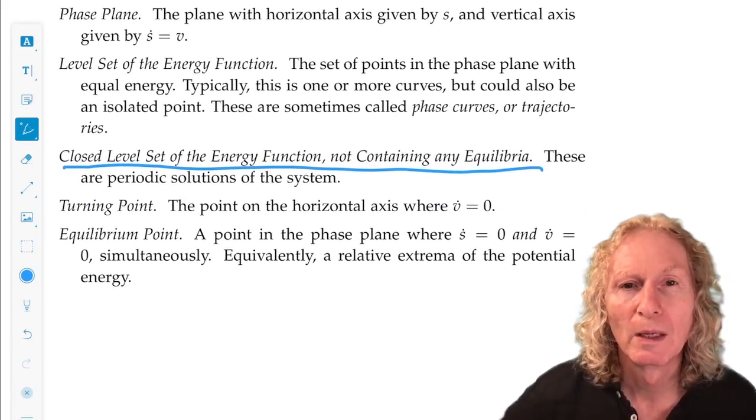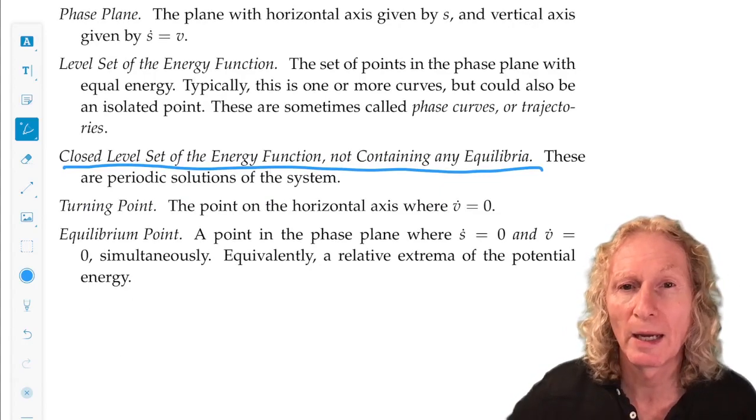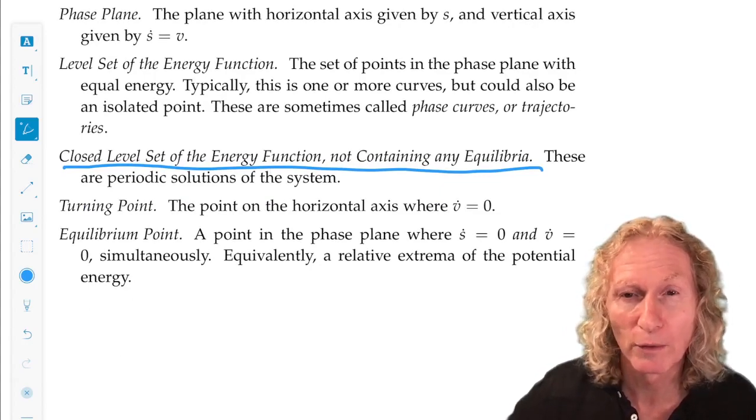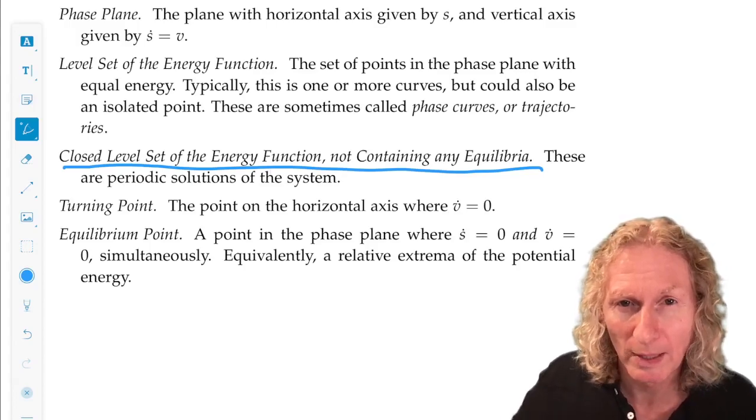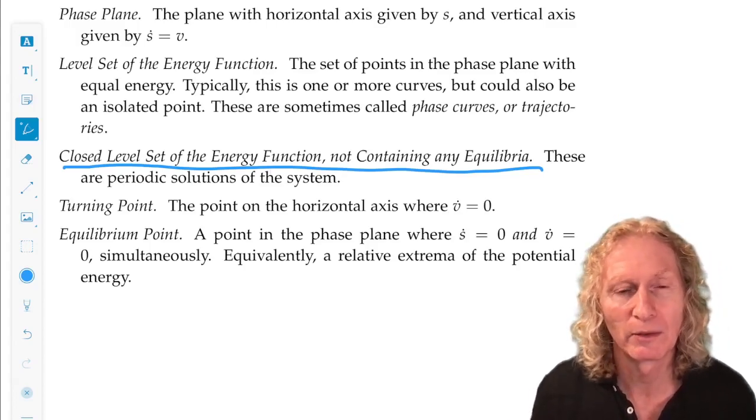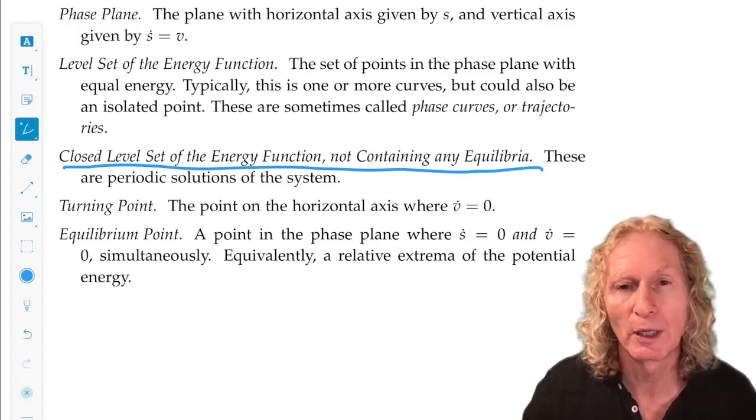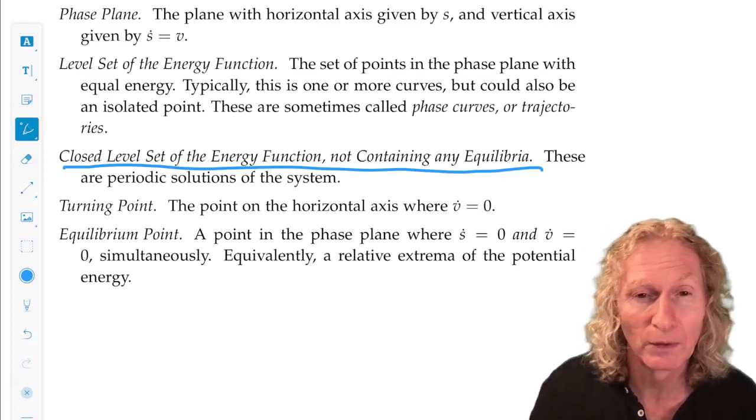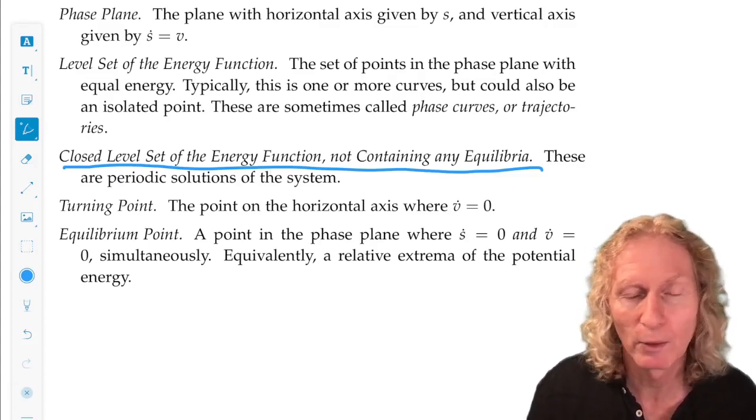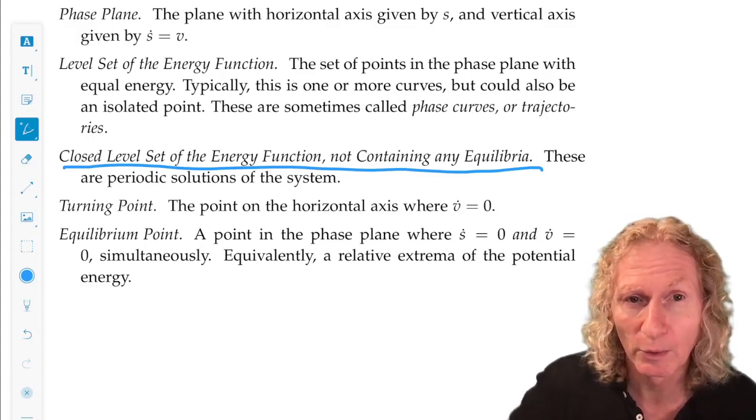Turning point. That's the point on the horizontal axis, where V equals zero. Horizontal axis is S. So that's where the trajectory crosses the axis, going from left to right or right to left, and then changes direction.